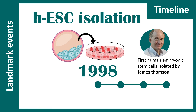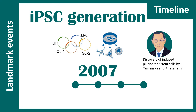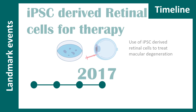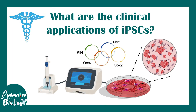Here are the key discoveries that changed the field of stem cells. The first embryonic stem cell was discovered in 1998. A major turning point was 2007, when Yamanaka and Takahashi found that these four factors could convert any cell into a stem cell — they received the Nobel Prize in 2012. By 2010, the first clinical trial of stem cell therapy took place. By 2017, iPSC-derived retinal cells were used to treat macular degeneration.